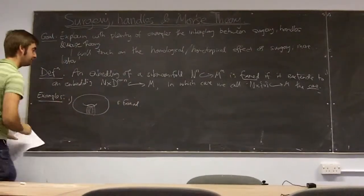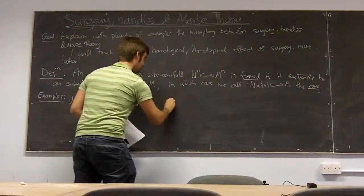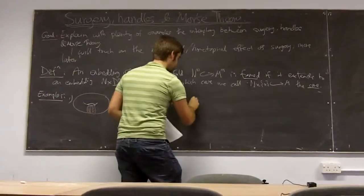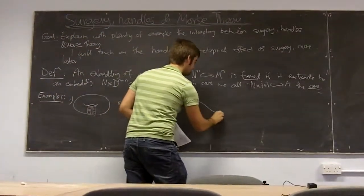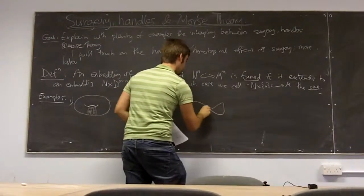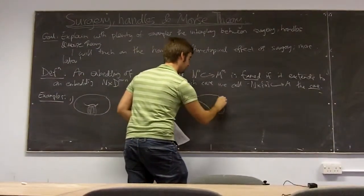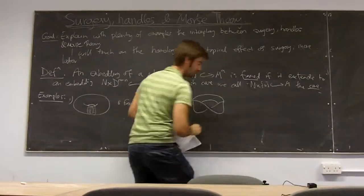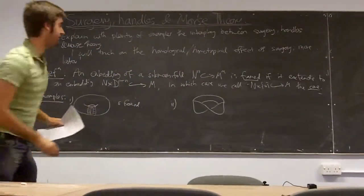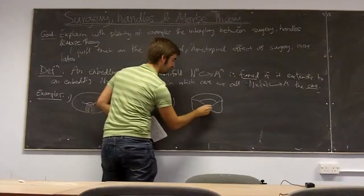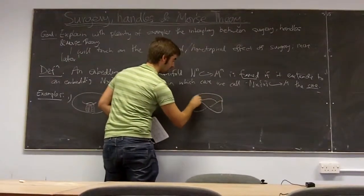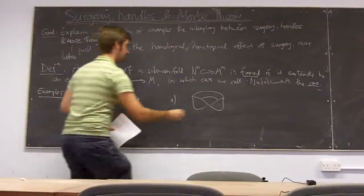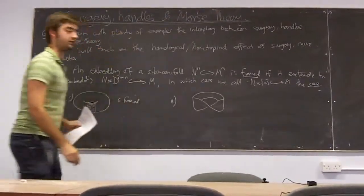Example two: a non-framed embedding. If we take a Möbius band and we embed a circle around like this, that can't be extended to S¹ cross an interval.